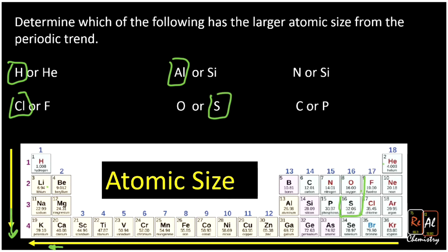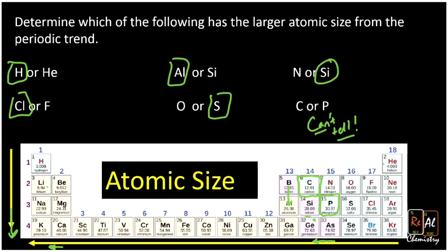Now for more interesting comparisons. Nitrogen versus silicon: silicon is to the left of nitrogen, suggesting it's bigger, and silicon is also below nitrogen, so both trends agree — silicon is bigger. Carbon versus phosphorus is trickier: going to the left suggests carbon would be bigger, but going down suggests phosphorus is bigger. We have competing trends, so it's totally acceptable to say we can't tell. 'Can't tell' is a valid answer when going down suggests one thing and going left or right suggests the other.